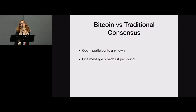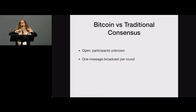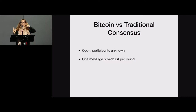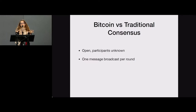Also in Bitcoin, to reach consensus, there's one message broadcast per round — that message is a block. When a miner solves a proof of work, they broadcast their block to the rest of the network with their proof of work, and all other miners accept it. That's very different from traditional protocols like PBFT or Paxos, which have a voting phase, a commit phase, and a lot of message exchange between participants.